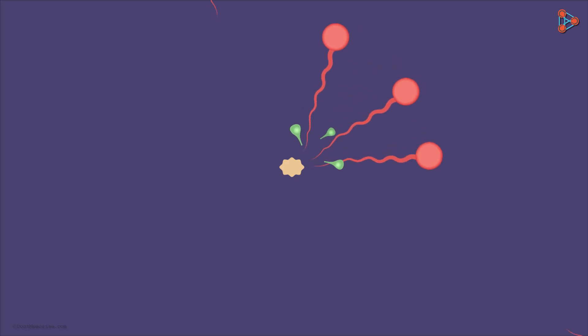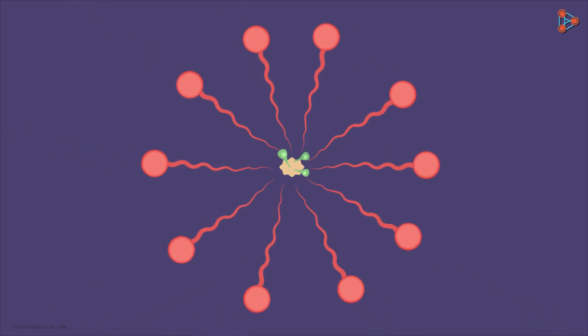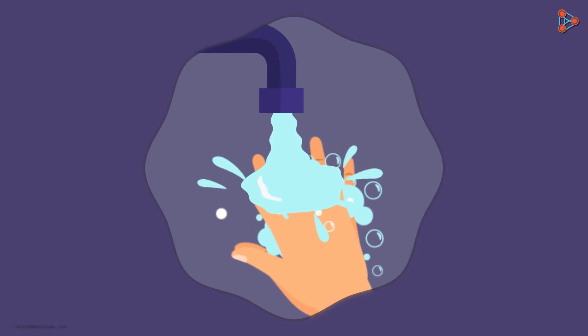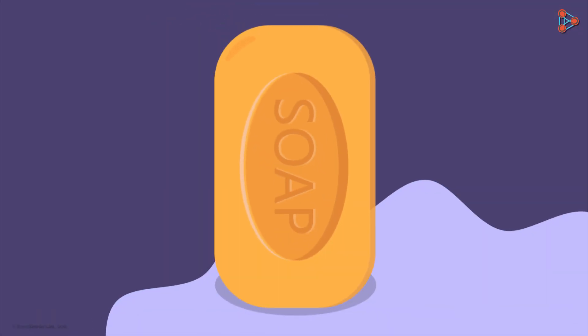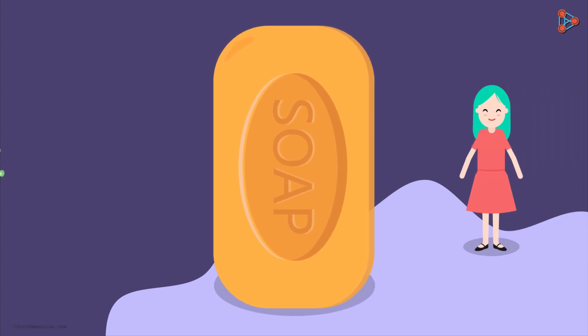These bubbles form floating cages and trap the destroyed virus. When we rinse our hands, it removes all the damaged and killed microbes which are trapped within the soap molecules. It is amazing how soap can form such a strong personal protection barrier between us and the microbes.